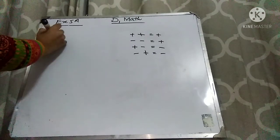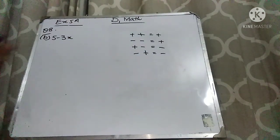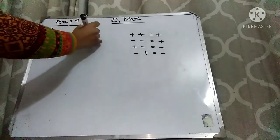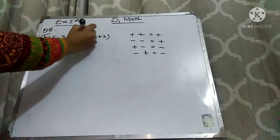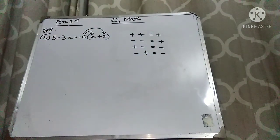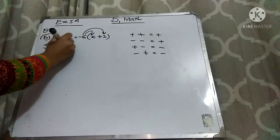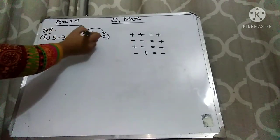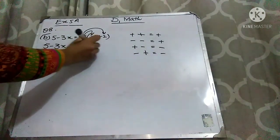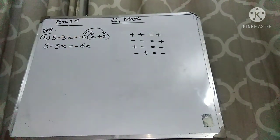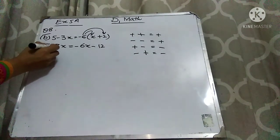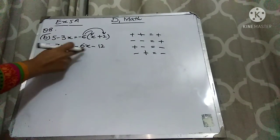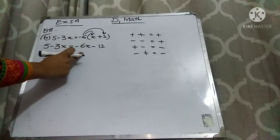Part B is: 5 minus 3x equals minus 6(x plus 2). Here 6 is multiplying with the bracket, so I have to multiply 6 with x and then with 2, including signs. I write down 5 minus 3x as it is. Multiplying 6 with x: minus plus is minus 6x. Now multiply 6 with 2: minus plus is minus, so 6 twos are 12. I will move the x term to the left hand side and the constant to the right hand side.